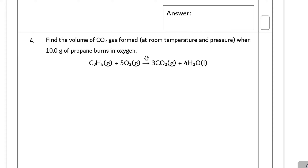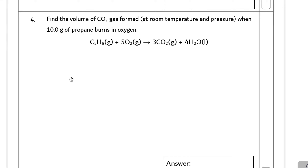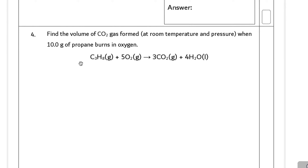Question four: find the volume of CO₂ gas formed at room temperature and pressure when 10 grams of propane burns in oxygen. This is more complicated because we have a mass in grams and we want to find a volume. So first of all, we need to calculate some moles.